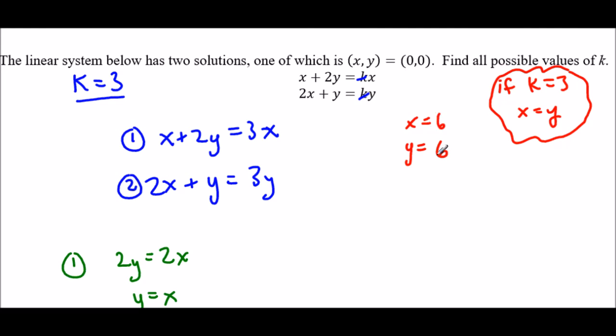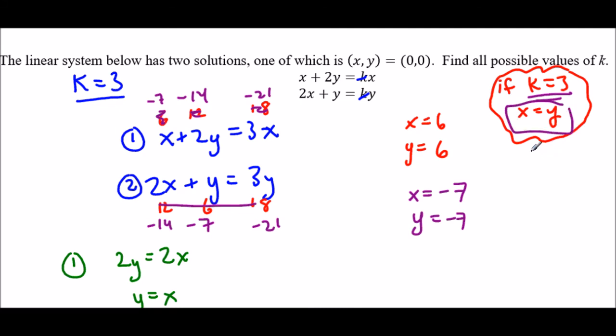So are these true equations if x equals 6 and y equals 6? So if x is 6, this is 6 plus 12 equals 18. That's true. What about down here? This is 12 plus 6 equals 18. So if x equals 6 and y equals 6, this is a true statement. So what if we tested another one just to make sure our math holds up? So negative 7. So if x is negative 7, y is negative 7. So I have negative 7 plus negative 14, and this would be negative 21. That's a valid equation. Same thing down here. This would be negative 14 plus negative 7, negative 21. So if k equals 3, we'll always get a solution where x equals y. So there's a lot of solutions here if k equals 3.